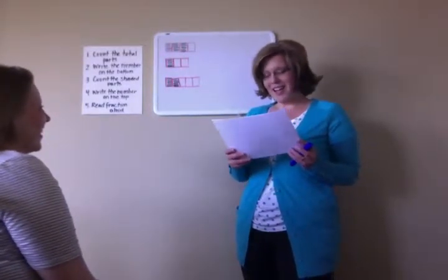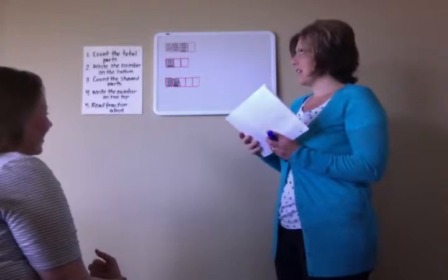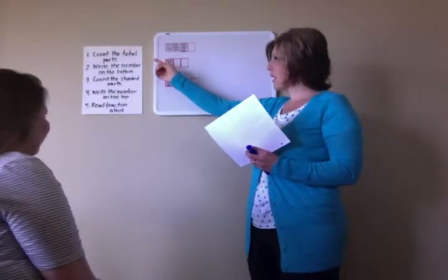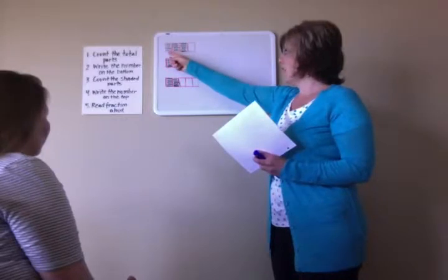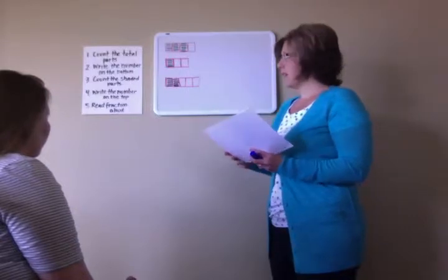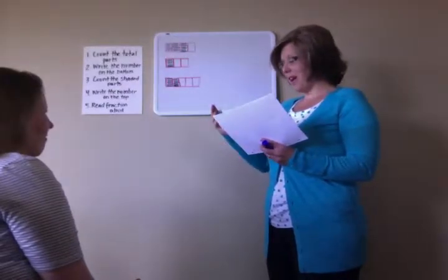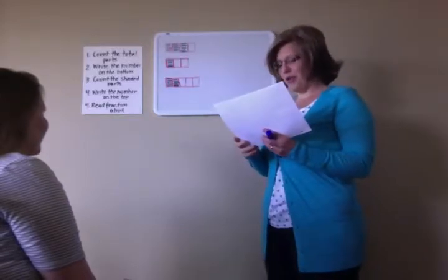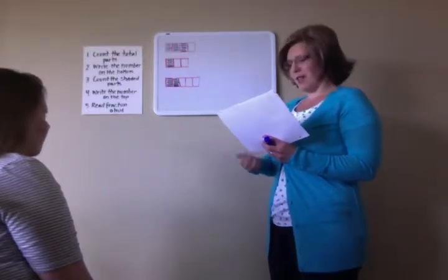Watch me as I write and say this fraction. When I write and say fractions, I follow these five easy steps. So the first thing that I do is I count the total parts. One, two, three, four. These are the total parts. What's the first step, class? Count the total parts. That's right. How many total parts are there? Four. Awesome. That's right, there's four.